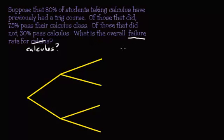So let's write out the stuff we know, and then we'll write out what we're trying to find. So, 80% of students taking calc have had a trig course. So what I'm going to do is I'm going to say the probability that you took a trig course is 0.8 for 80%. So that means the probability that you did not take a trig course and you're in the calculus class would be 0.2.